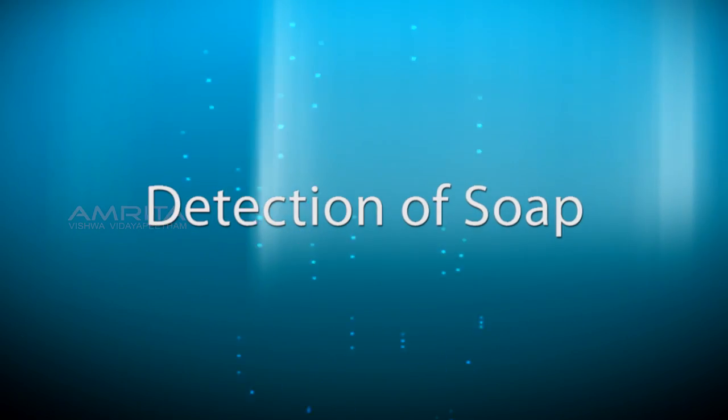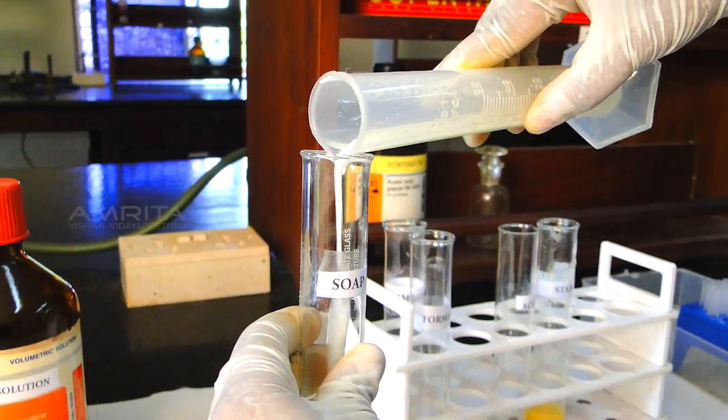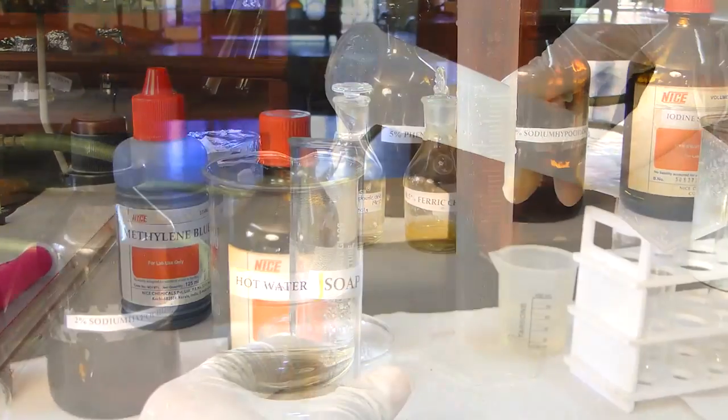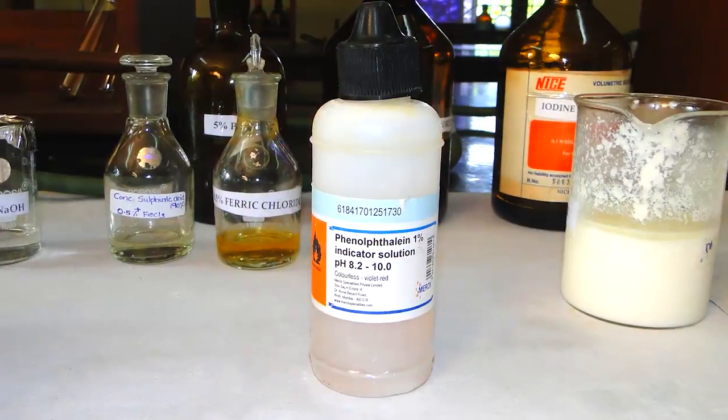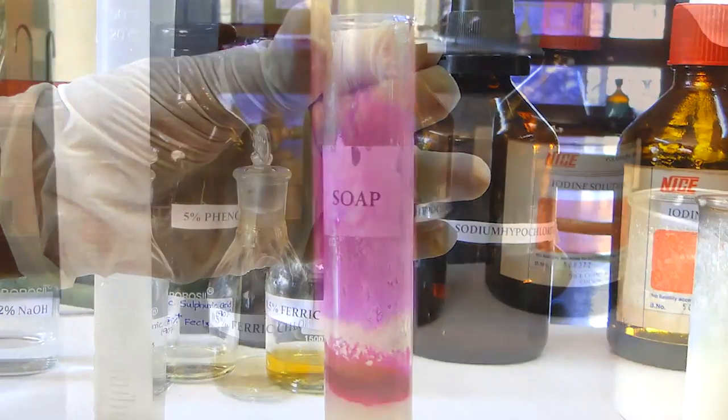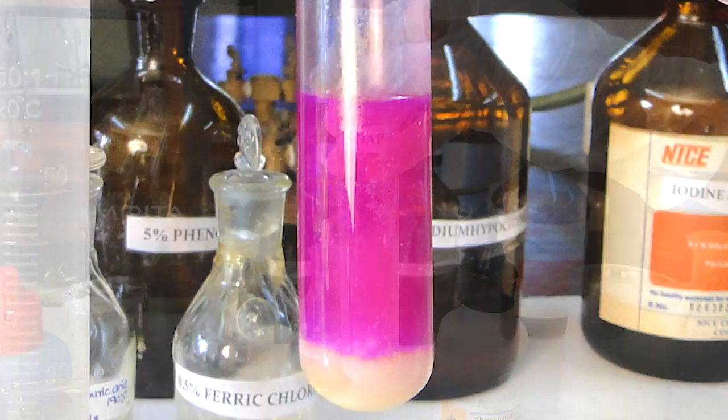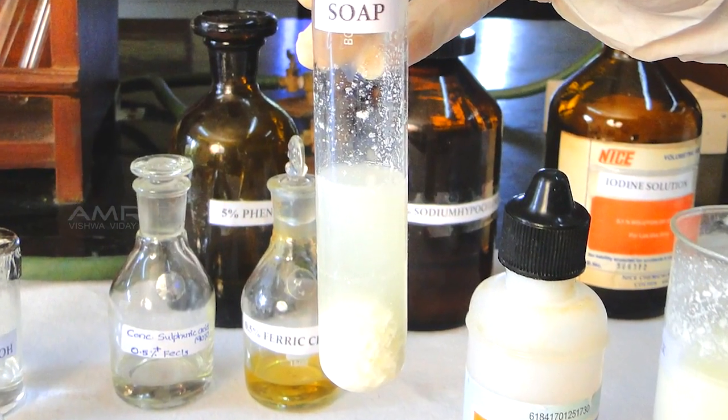Detection of soap. Pour 10 ml milk into a test tube labeled soap, then add 10 ml hot water to the milk. Add 1 to 2 drops of phenolphthalein indicator into the test tube and mix this gently. If the color turns pink, it indicates the presence of soap in the milk. If the color remains the same, it shows the absence of soap in milk.